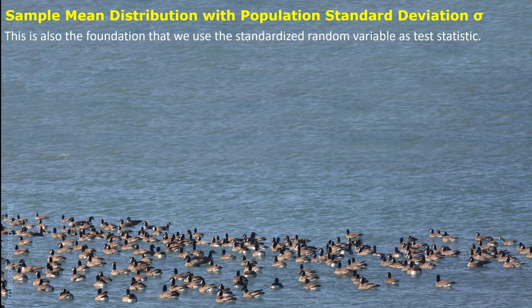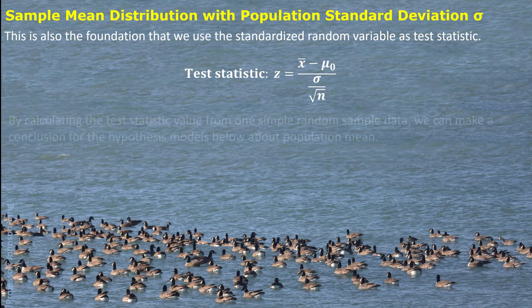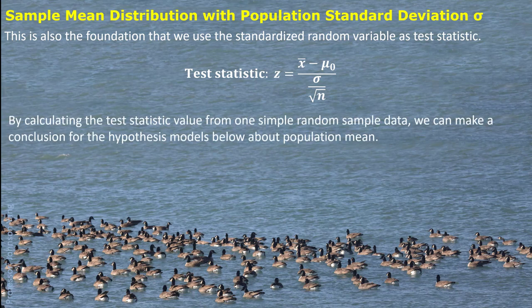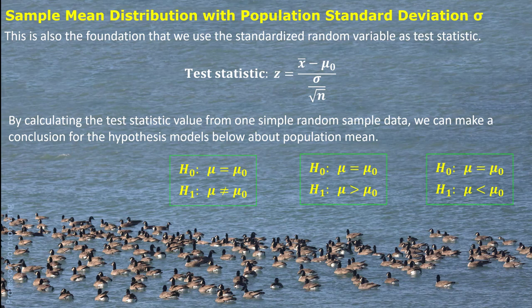With this sampling distribution, we can use the standardized random variable as a test statistic. By calculating the value of this test statistic from one random simple sample data, we make a conclusion for the hypothesis about the population mean — either a two-sided hypothesis or a one-sided hypothesis.